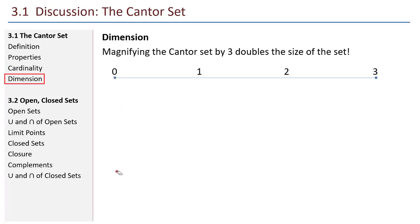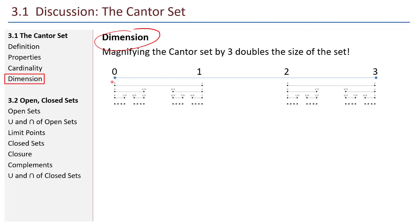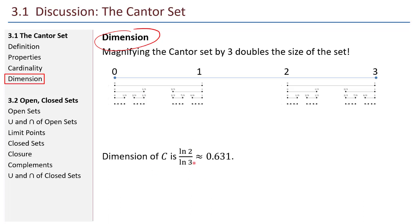Here's another crazy thing about the Cantor set regarding dimension. If you magnify the Cantor set by three, it doubles the size of the set. Why should magnifying by three double the size? Here's the idea: instead of starting with zero to one, start with zero to three — you end up making two Cantor sets. Mathematicians assess this dimension as the natural log of two divided by the natural log of three, which is about 0.631 — a fractional dimension. This is where the word fractal comes from. The Cantor set was one of the earliest fractals studied.